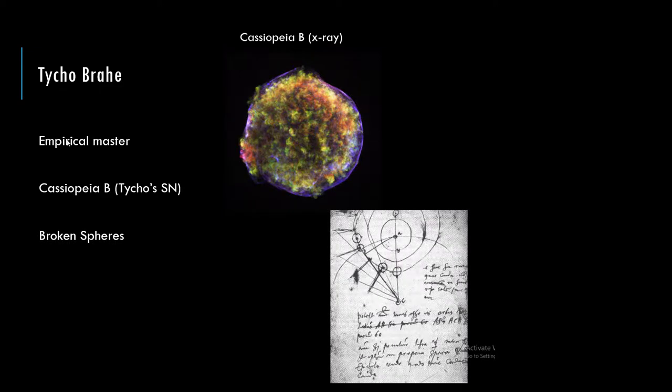He was also interested in comets and measured their motion. He was able to estimate the distance to comets. At the time, there was a debate about whether comets occur out in the heavens or in the atmosphere. Brahe was able to show, based on distance measurements, that a comet was out in space — at least this far away.